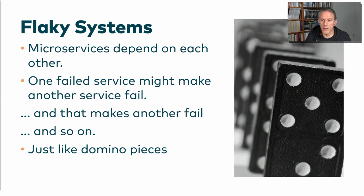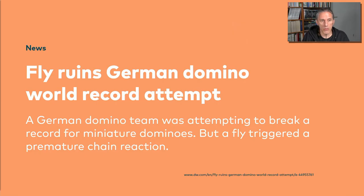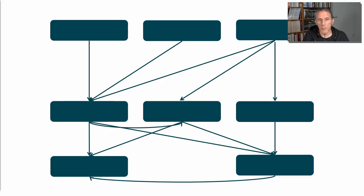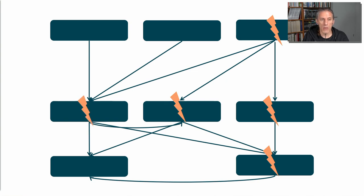This is actually a real challenge. Something that happened in Germany: a fly was sitting on one domino piece, and that one fell over, ruining a domino world record attempt. That is what can happen with your microservices system as well. Because if you have these microservices and one of them fails, then the next one depending on that might fail, the next one depending on that might fail, and so on.